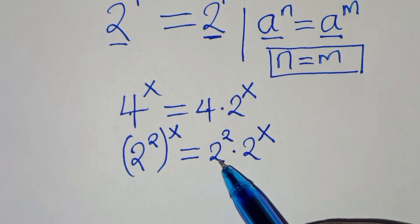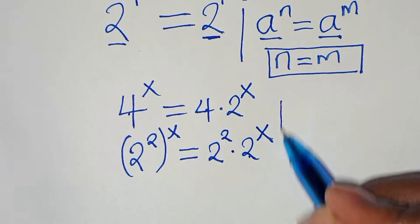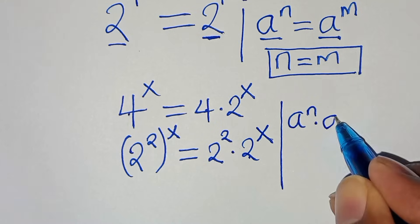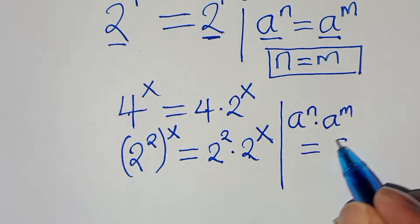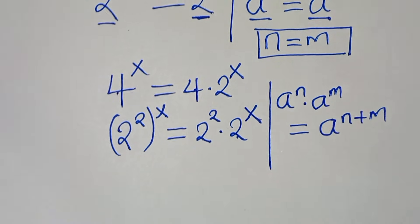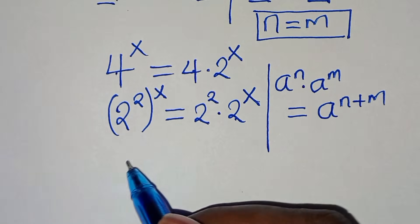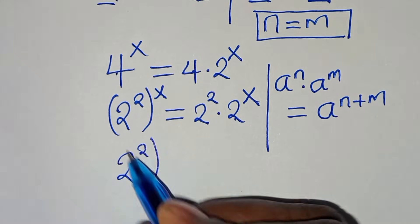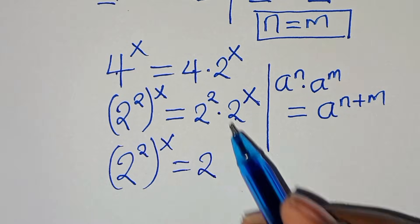The next step is that we can express 4 as 2 to the power of 2, so we have 2 to the power of 2 raised to the power of x, equal to 2 times 2 to the power of x. This is in the form of a to the power of n times a to the power of m, which we can express as a to the power of n plus m. Applying this exponent property, we get 2 to the power of 2 raised to the power of x equals 2 to the power of 2 plus x.